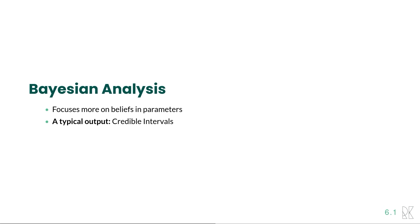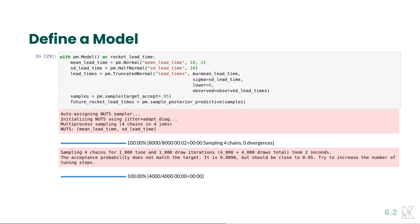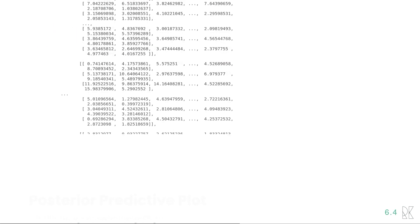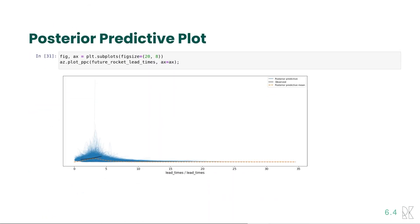The Bayesian side focuses more on belief in parameters, and a typical output would be a credible interval. So in a Bayesian analysis, a modern one in particular, we would define a model using a probabilistic programming language, in this case PyMC, and we would use that to infer some parameters and sample some future outcomes that we expect to happen. Here are the future outcomes once we've sampled them. And then here's what's called a posterior predictive plot for what all those future outcomes may be. And you can see there's quite the range of lead times here, from 0 to 35. The density varies, but we've got this big range.